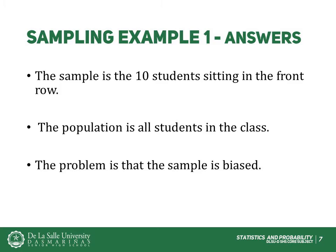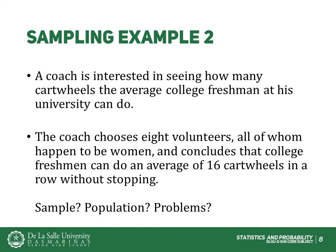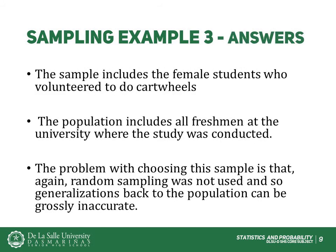Consider another example. A coach is interested in seeing how many cartwheels the average college freshman at his university can do. The coach chooses 8 volunteers, all of whom happen to be women, and concludes that college freshmen can do an average of 16 cartwheels in a row without stopping. What is the sample? What is the population? Can you identify any problems with choosing the sample in the way that the coach did? The sample includes the female students who volunteered to do cartwheels.